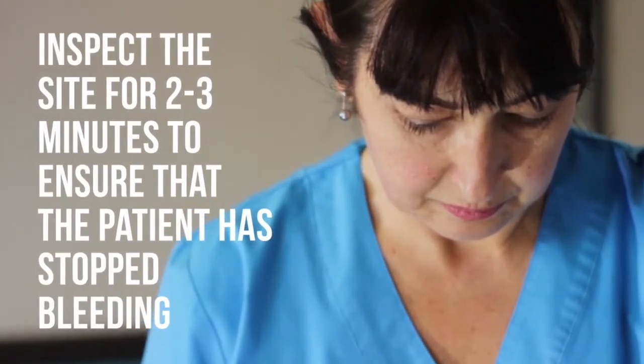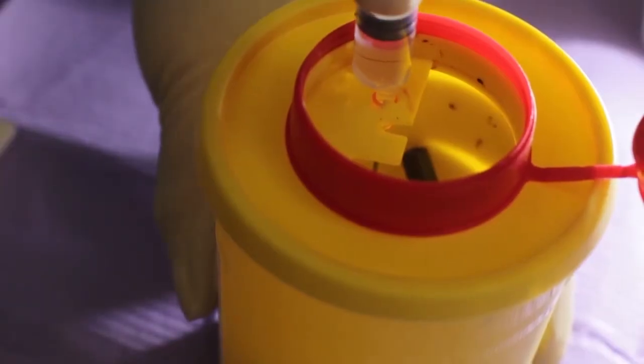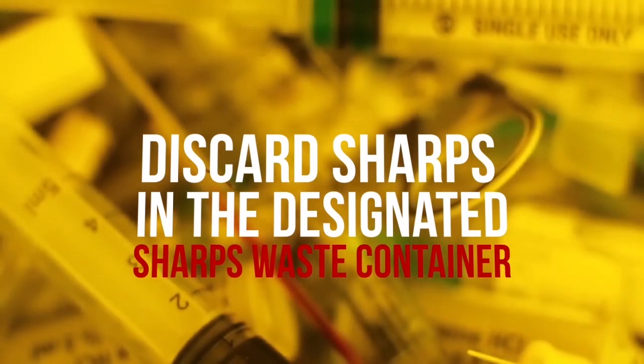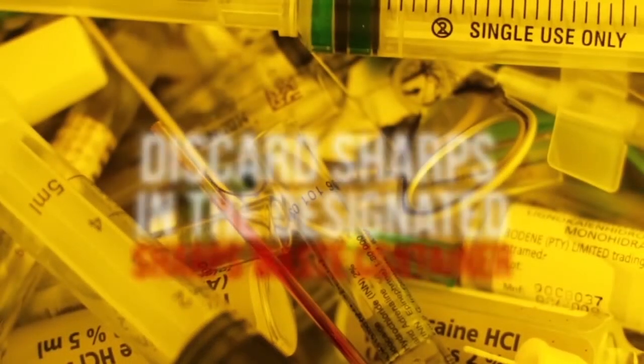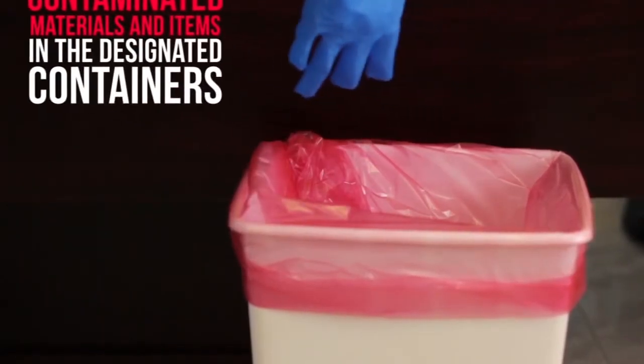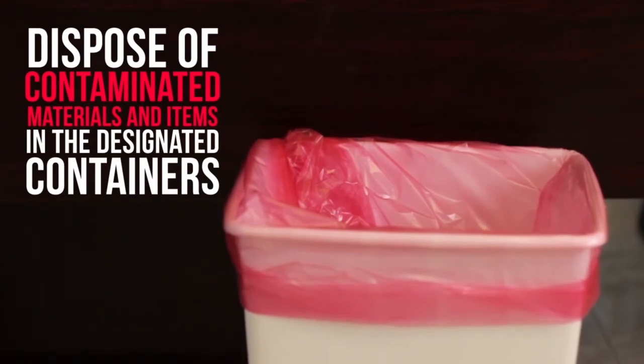Inspect the site after two or three minutes to ensure that the bleeding has stopped. Discard sharps, the used needles, broken glass and syringe or blood sampling device into a puncture resistant sharps container. Place items such as used gloves and all items contaminated with blood or body fluids into the infectious waste.